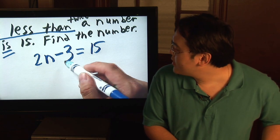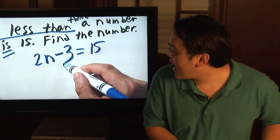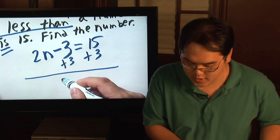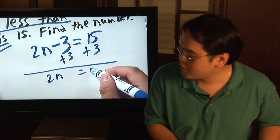You want to get n by itself, so you add three to both sides. So you have 2n equal to eighteen.